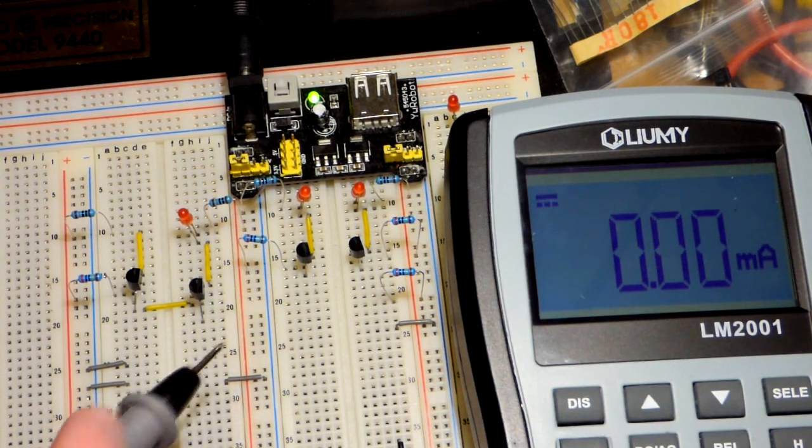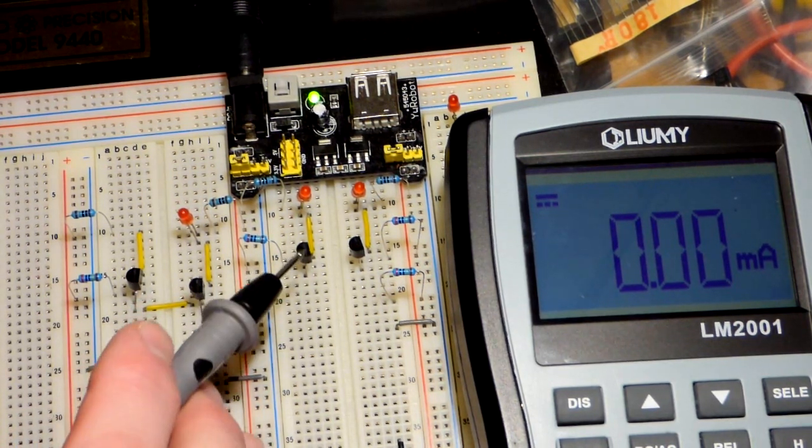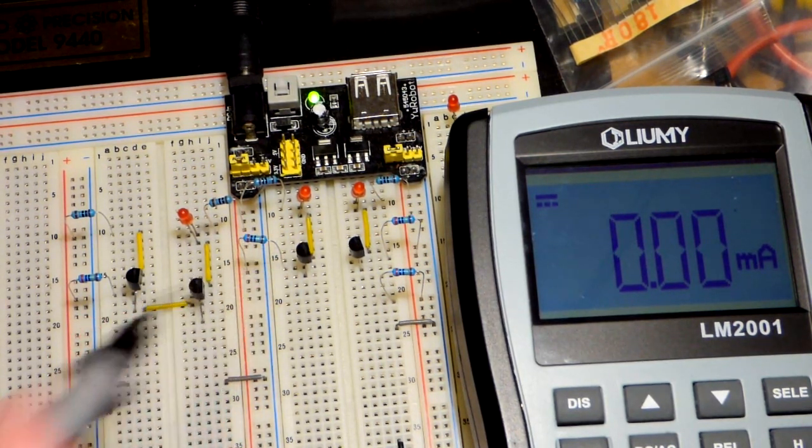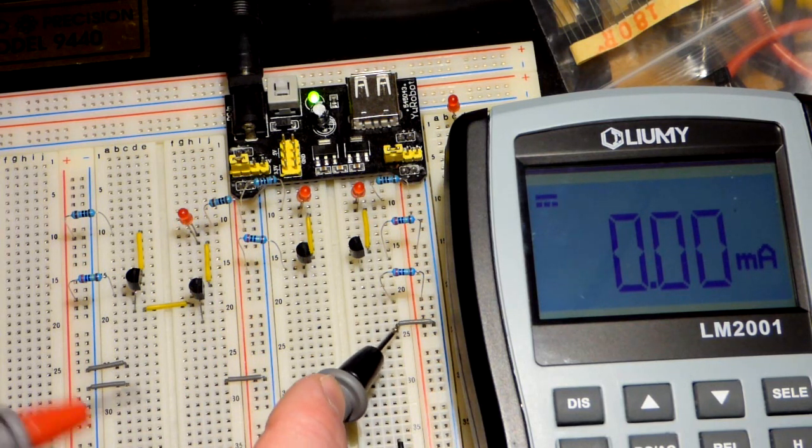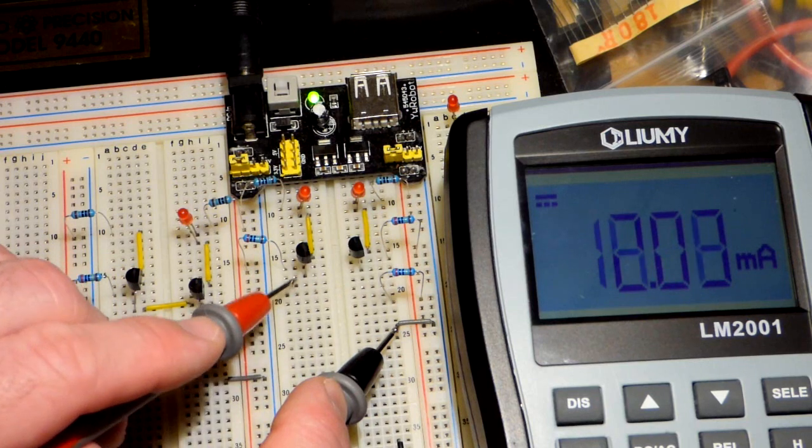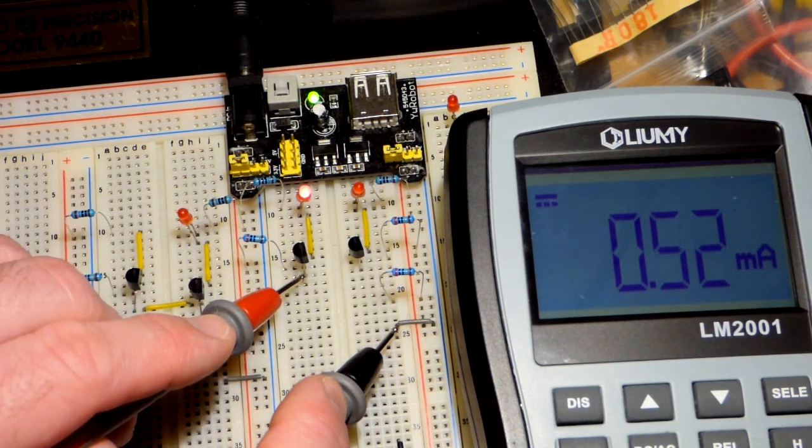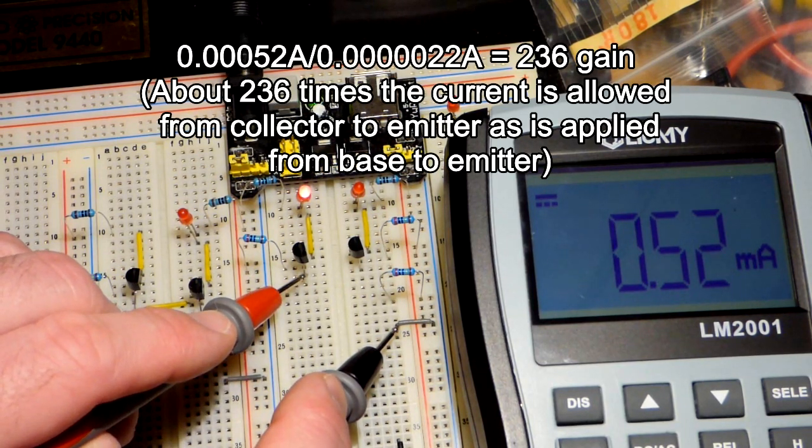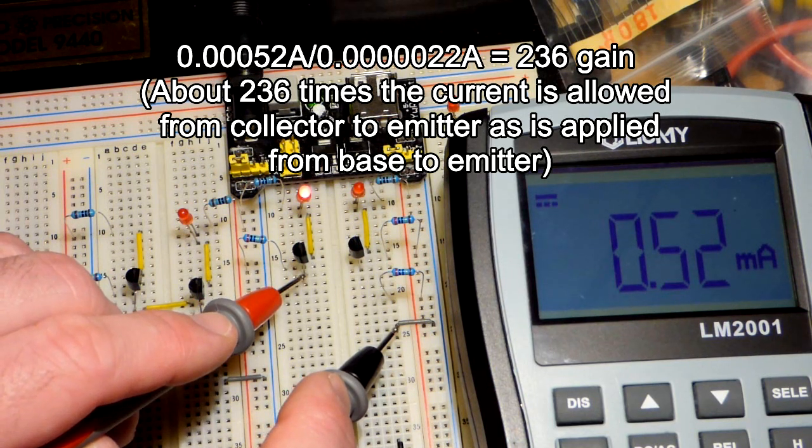Now let's first do the regular transistor. So with 2 million ohms of resistance to the base, that little bit of current that we got. Oops. We were going to do this one first, weren't we? We're going to get about half of a milliamp of current, according to the meter.